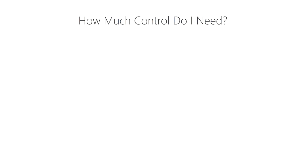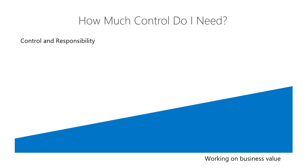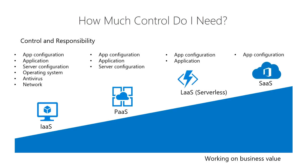The first question — how much control do I need — is all about control and responsibility versus the ability to work on business value. The categories of cloud computing are infrastructure as a service, platform as a service, logic as a service (also called serverless), and software as a service. With IaaS you have control over the network and antivirus on a VM, but you're also responsible for updating that antivirus and patching the operating system. Maybe you need that, maybe you don't.